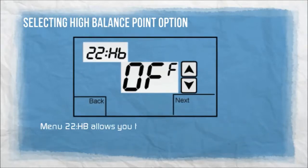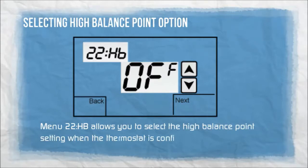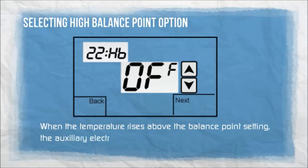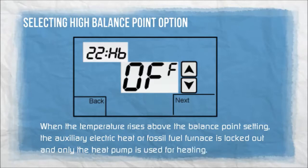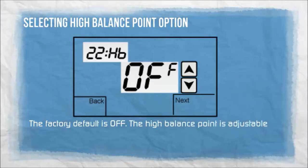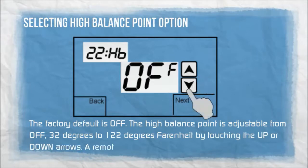Menu 22HB allows you to select the high balance point setting when the thermostat is configured for heat pump or fossil fuel. When the temperature rises above the balance point setting, the auxiliary electric heat or fossil fuel furnace is locked out and only the heat pump is used for heating. The factory default is OFF. The high balance point is adjustable from OFF, 32 degrees to 122 degrees Fahrenheit. A remote outdoor sensor must be installed.